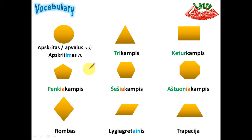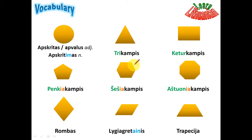I'll say the nouns — the names of the shapes: three-kampis, four-kampis, five-kampis, six-kampis, eight-kampis. You see the stress is mostly at the end of the first root.